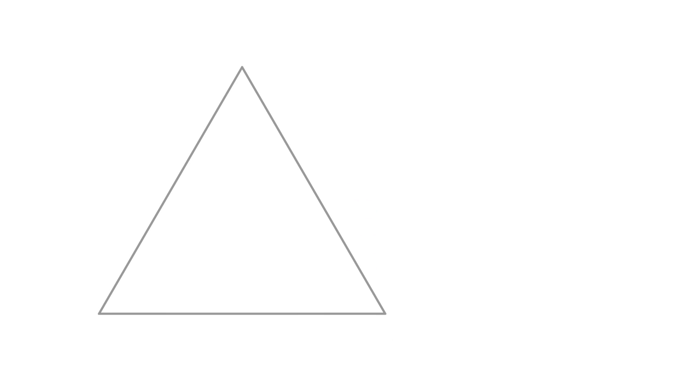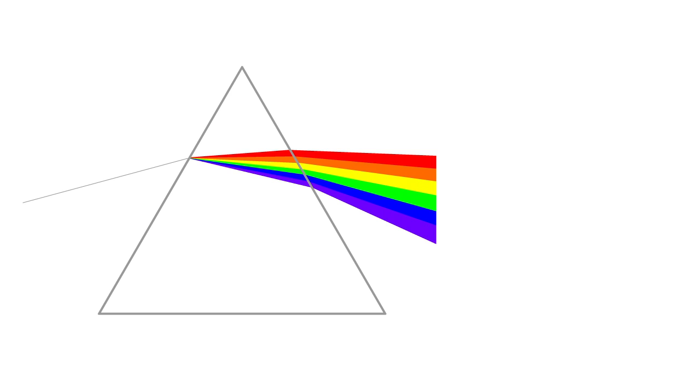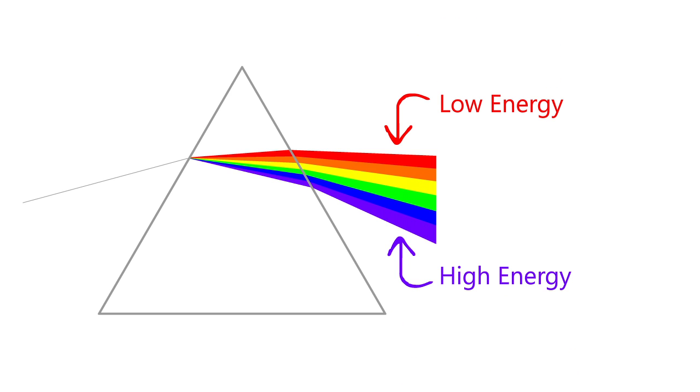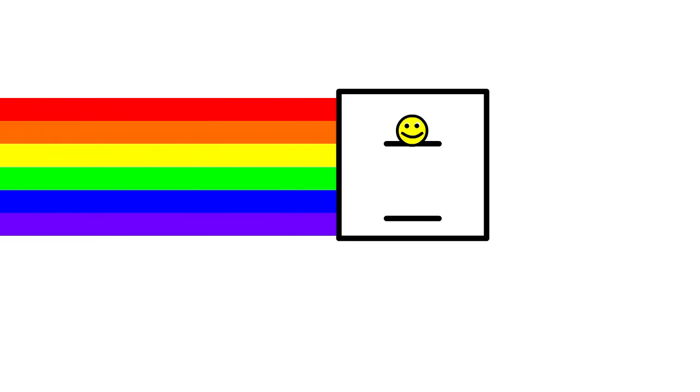Remember that white light is actually composed of colors corresponding to the colors of the rainbow, and each color has a different energy. If the transition from a ground state to the excited state is equal to the energy of blue light, for example, the electrons will absorb blue light and reflect the rest of it. Such a compound would look orange.